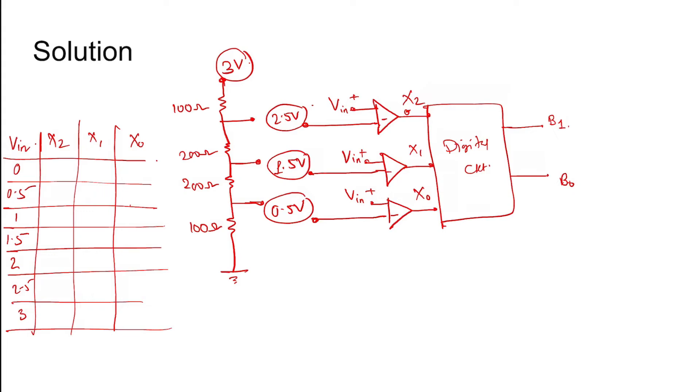The inverting terminal input is used in all cases. So for Vin = 0 and 0.5, the outputs are 0, 0, 0 because Vin is not exceeding these reference voltage values. For Vin = 1, x2x1x0 becomes 0, 0, 1.